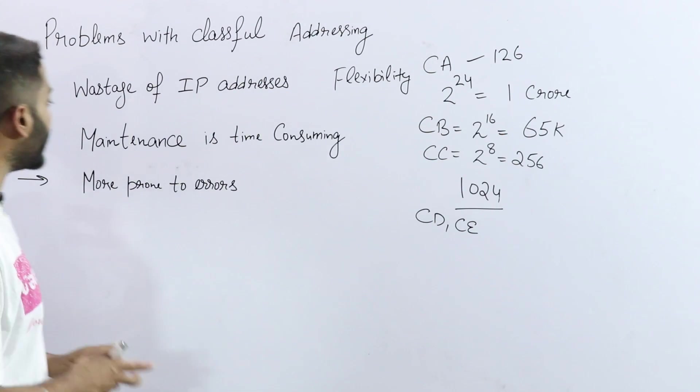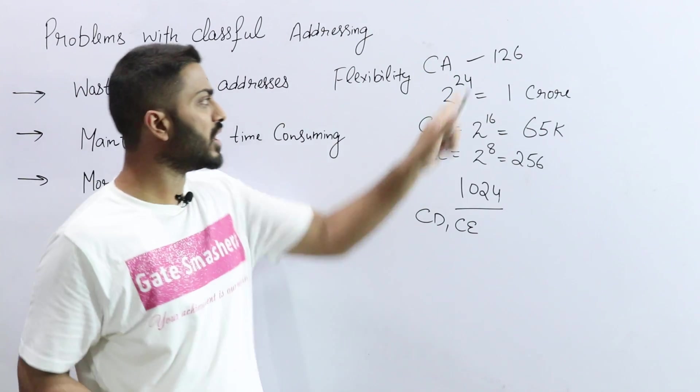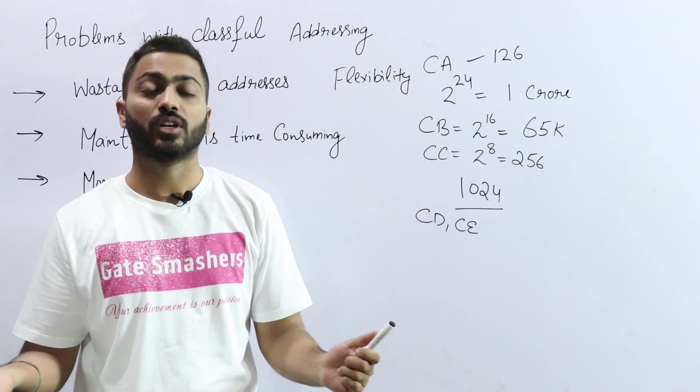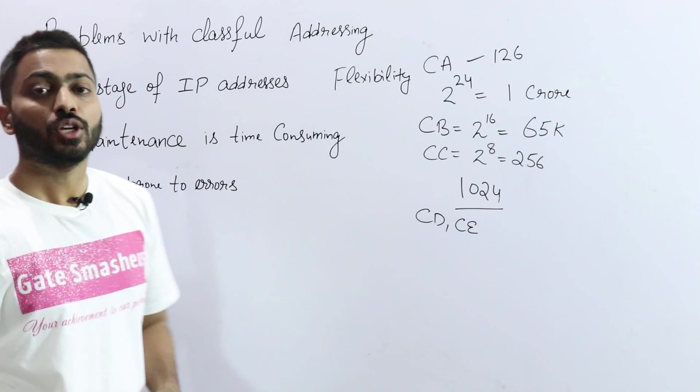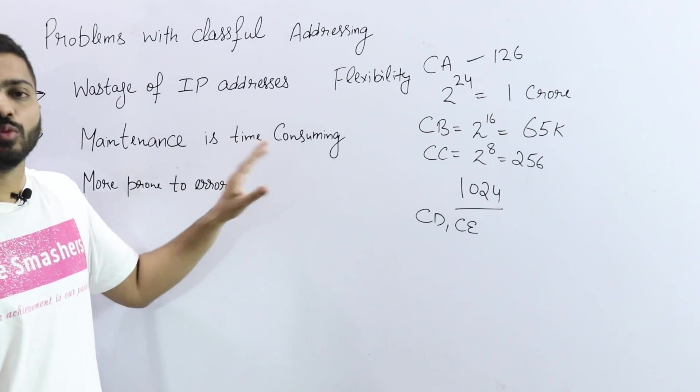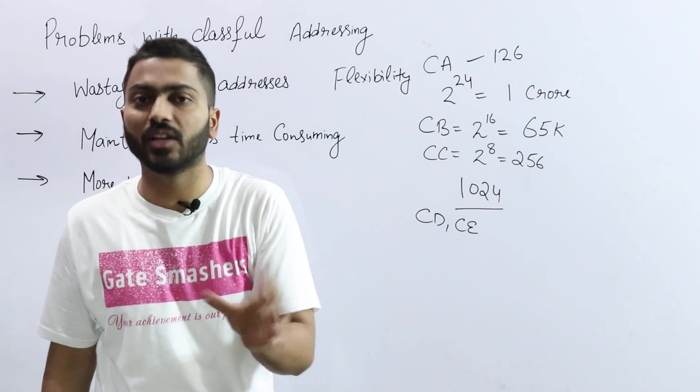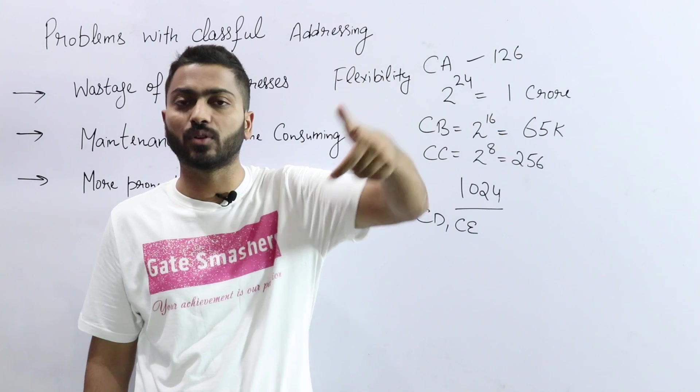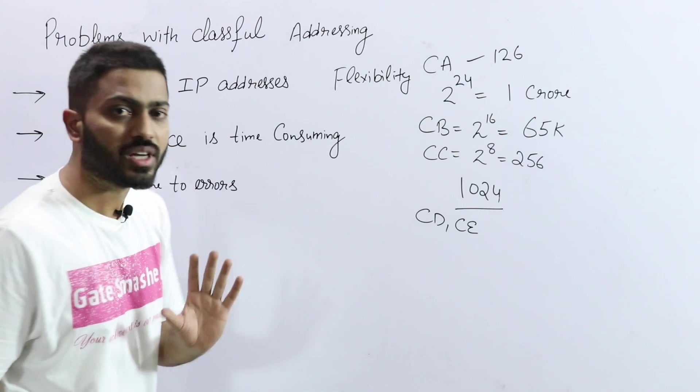Now, the second point is maintenance is very time consuming. If I have a very big network in class A, in such a large network there will be a problem with maintenance. Maintenance is possible in smaller networks. To reduce the cost of maintenance, we can use the concept of subnetting. Subnetting logically divides a big network into small networks, so maintaining a small network is easier as compared to a big network.